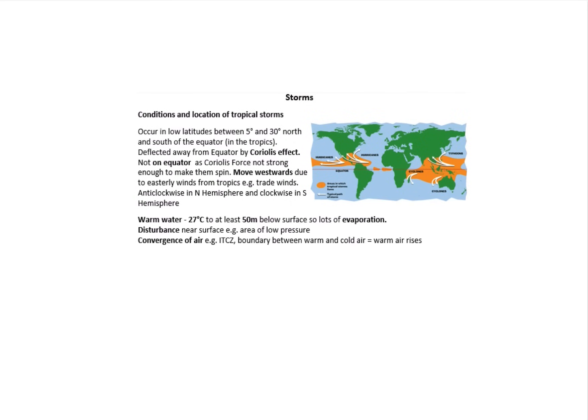This leads us nicely on to thinking a bit more about storms and the condition and location that's necessary. We know these are going to occur in low latitudes between five degrees and 30 degrees north and south of the equator. Not on the equator, obviously, as we've got the Coriolis force that's strong enough to make them spin. Think about the condition necessary for them—warm water about 50 metres below the surface, lots of evaporation, convergence of air. So you've got the ITCZ, the intertropical convergence zone, that boundary between warm and cold air, and that warm air rising creates these perfect conditions for tropical storms.